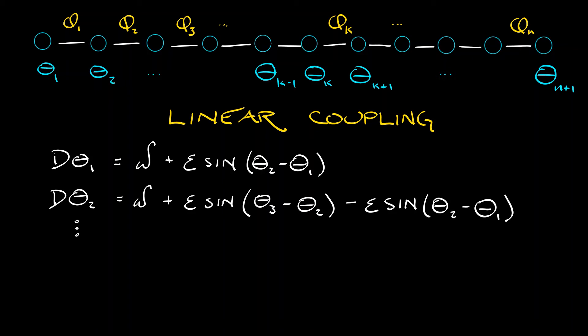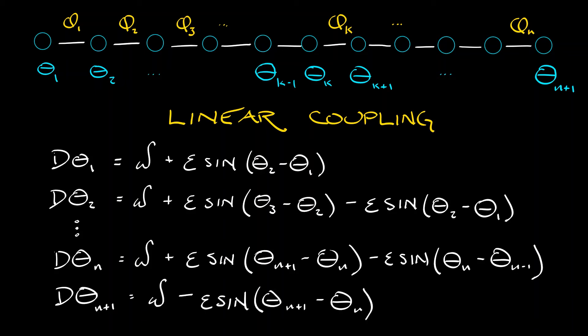This continues in the same pattern all the way up through d theta n, which is going to be equal to omega plus epsilon times sine of theta n plus 1 minus theta n minus epsilon times sine theta n minus theta n minus 1. That last spinner, the n plus first spinner, only has two terms in it. You get omega minus epsilon sine theta n plus 1 minus theta n. It looks very similar to what happens with the first spinner that was only influenced from the right. The last spinner is only influenced from the left.